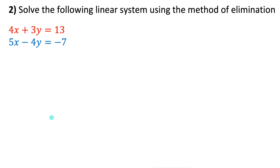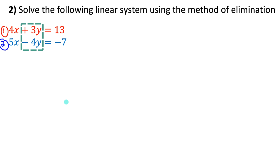Example 2: solve the following linear system using elimination. This one's much harder than the first. Both equations are in the proper format, but the x's have different coefficients and the y's have different coefficients. We're going to have to multiply one or both equations by a constant to make the coefficients have the same absolute value.